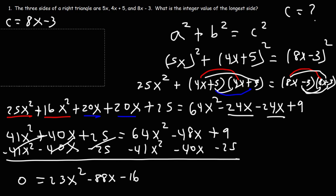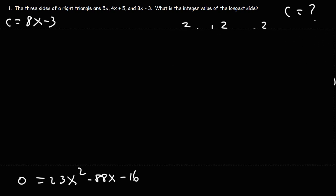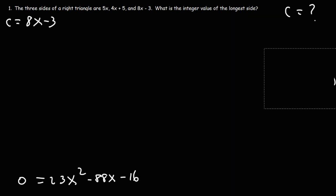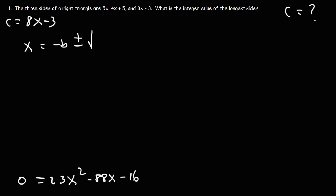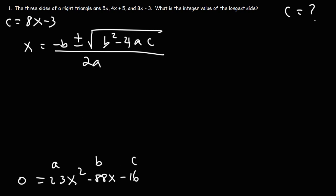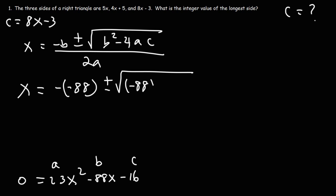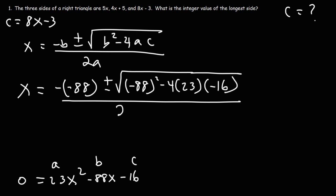Now we need to solve this quadratic equation. It's difficult to factor, so we use the quadratic formula: x equals negative b plus or minus the square root of b squared minus 4ac, divided by 2a. In this example, a is 23, b is negative 88, and c is negative 16. So we get 88 plus or minus the square root of negative 88 squared minus 4 times 23 times negative 16, divided by 2 times 23.